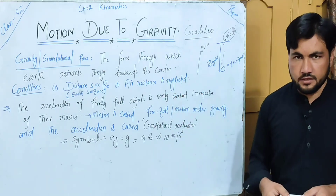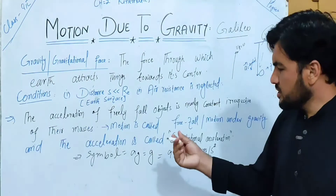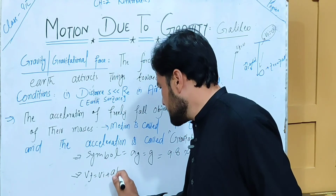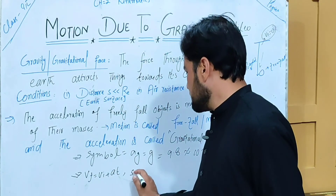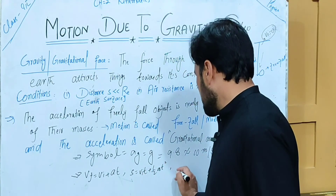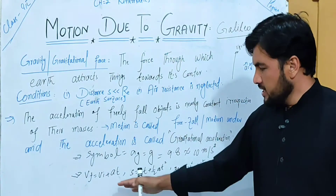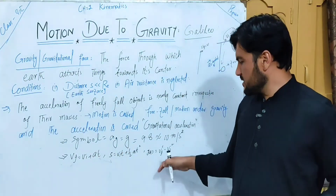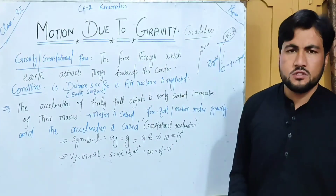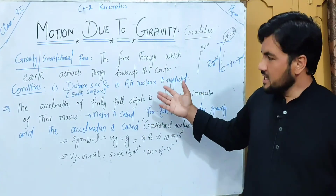Using the two conditions, we apply three equations of motion. The first equation: vf = vi + gt. The second equation: s = vi·t + ½g·t². The third equation: 2g·s = vf² − vi². Here, velocity, acceleration, time, and displacement are vector quantities.